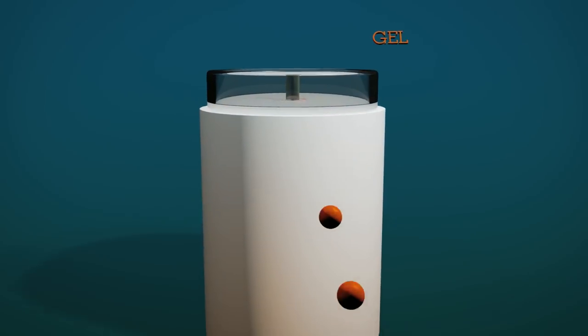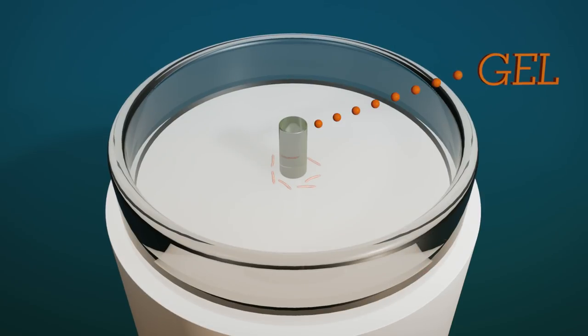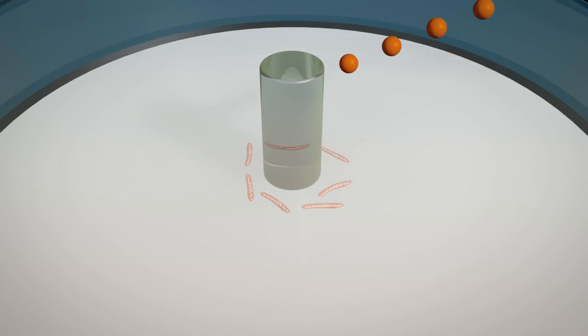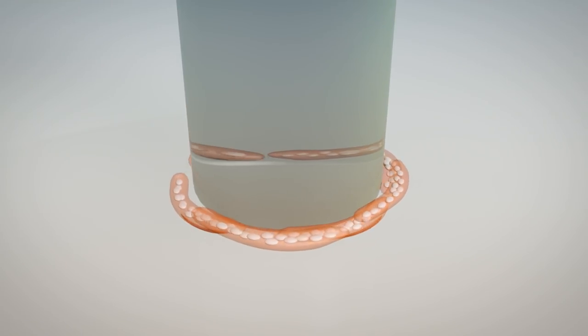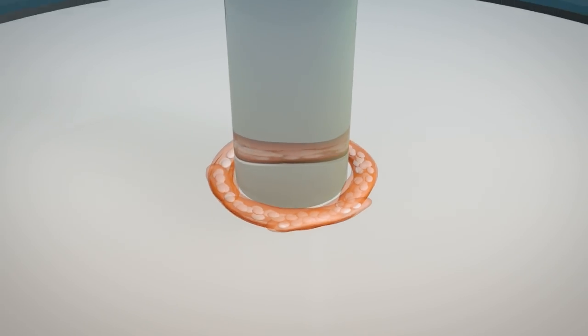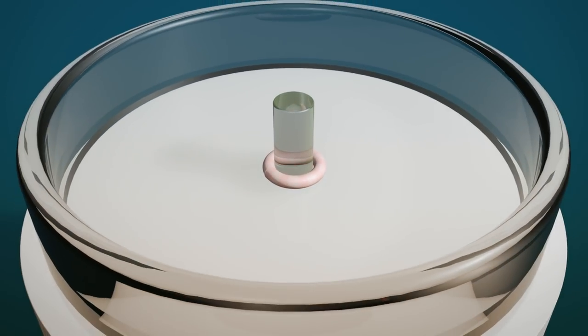The myotubes are then placed in a ring around a central hub of gel. Muscle's innate tendency to contract causes them to put on bulk, growing into a small piece of muscle tissue.